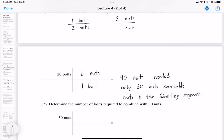So nuts is the limiting reagent because we don't have enough nuts to react with 20 bolts. Therefore, by comparison, nuts are the limiting reagent. Okay, so that's the first method.